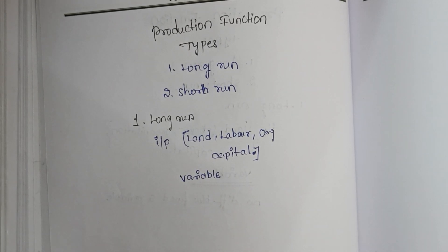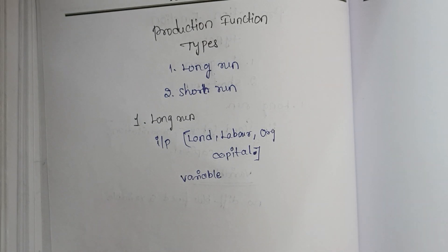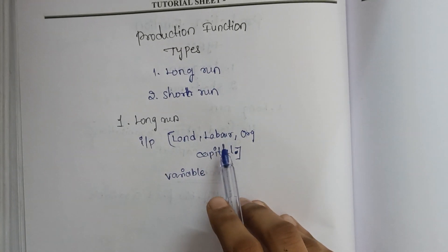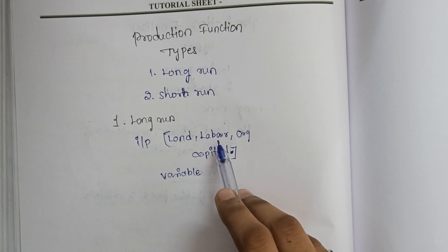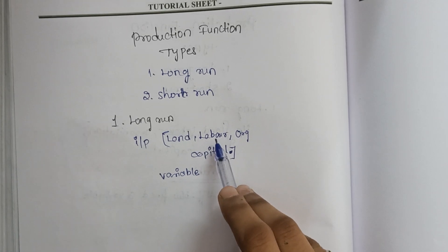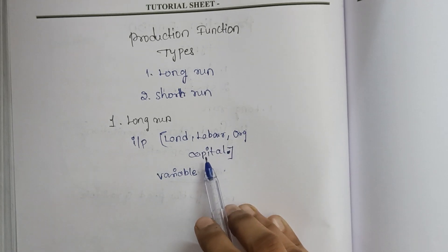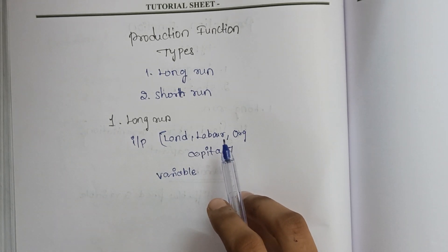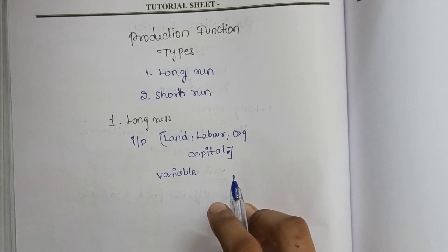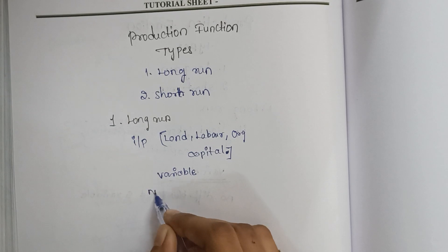If production is changing, then labor and capital — whatever we are investing — will also change. When we want more production, we increase the number of laborers. When we need just average production, we decrease the labor. Similarly, capital changes: if we want to produce more, we have to invest more. So all input factors will be changing in the long run, and there is no distinction between fixed and variable.